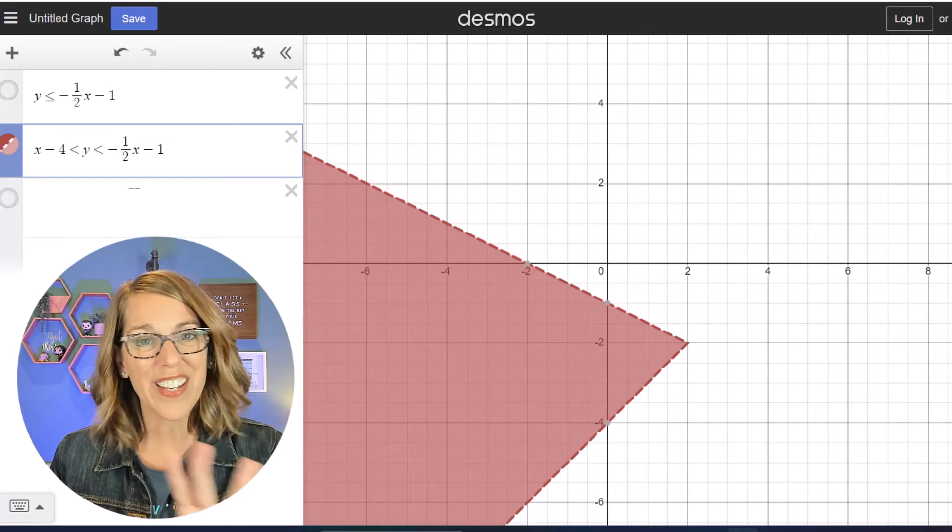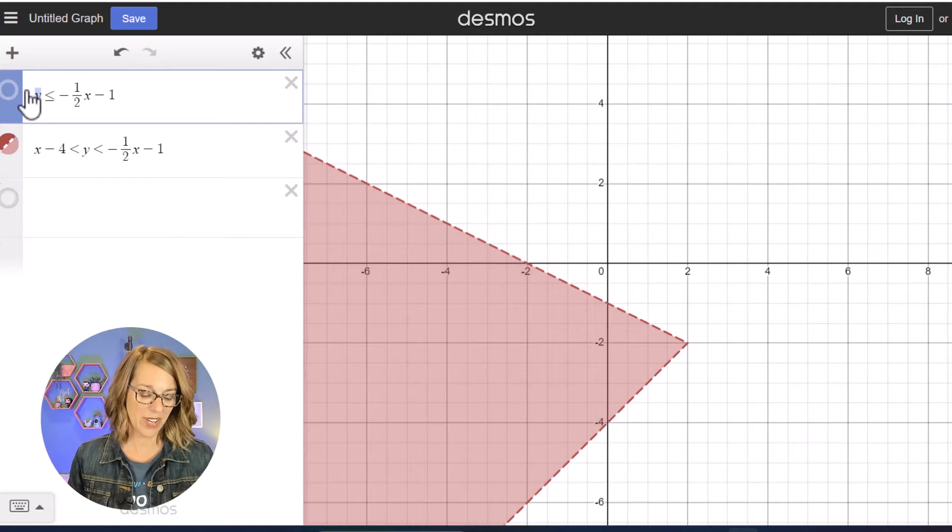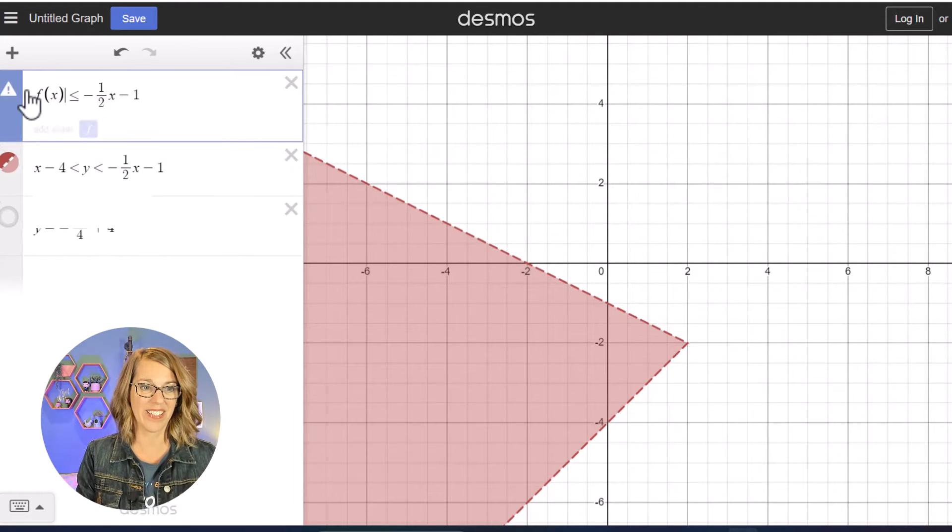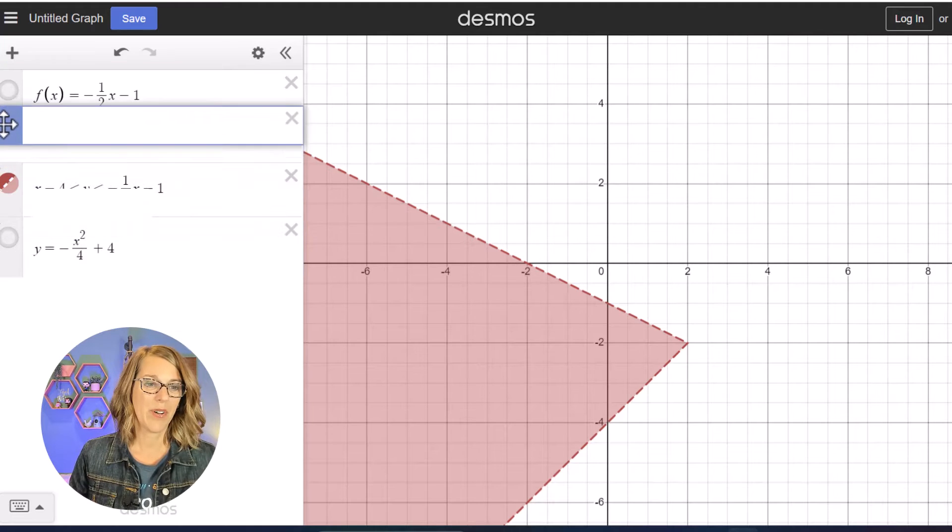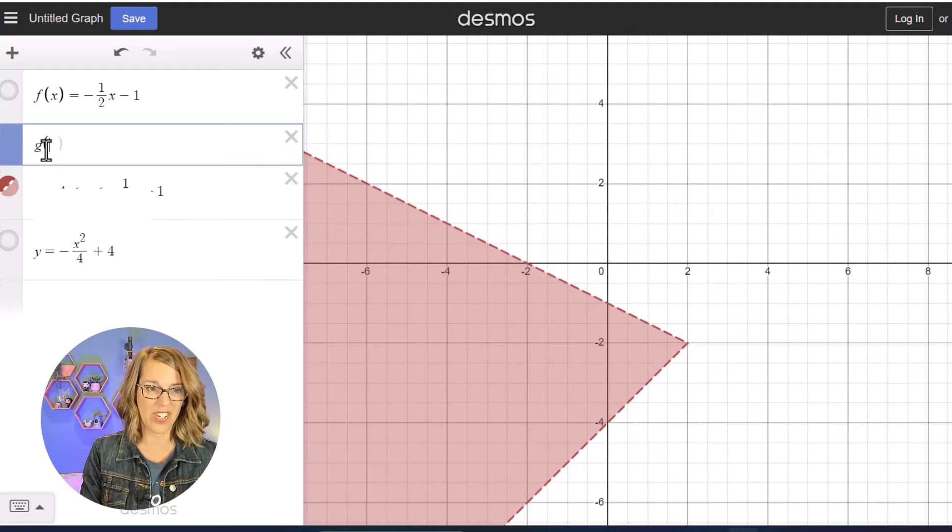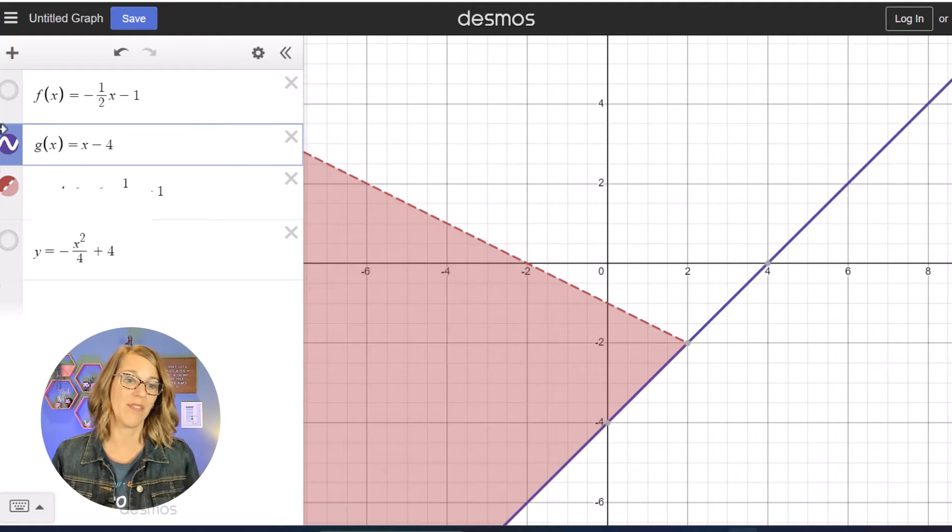Now I could have gotten a little fancier and named these instead. Let's say that I want to name this one F of X and I'm gonna let this one be equal. I'm gonna go ahead and add in another one. Let's call this next one G of X and I want G of X to be that X minus 4.